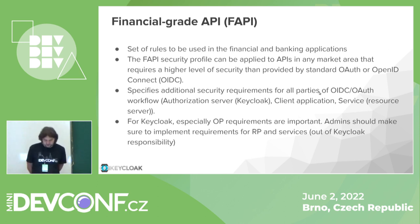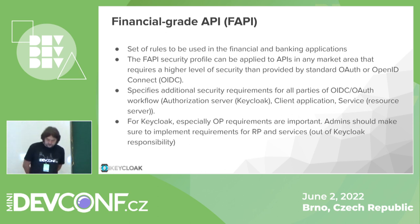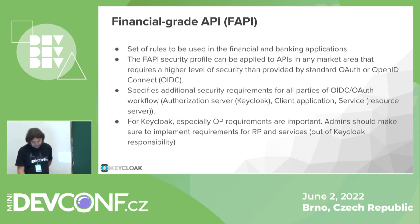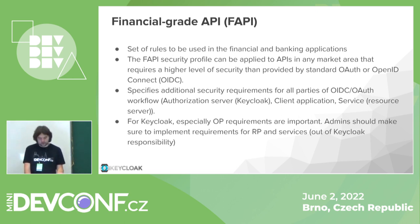Now about FAPI and what it is. Financial grade API, or FAPI, is a set of rules to be used in financial and banking applications. It's mostly focused on those applications but can be used in others as well. Those applications use standard OpenID Connect and OAuth protocols — OpenID Connect being the extension of OAuth. FAPI has a set of additional security requirements for Keycloak, for the client application, and for the service, making it essentially a more secure OpenID Connect.